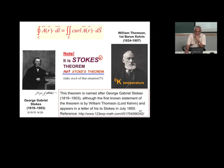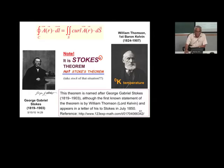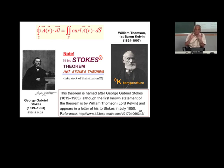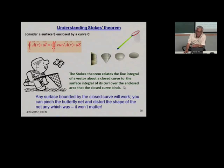The surface S is not unique for a given curve C — the same C can correspond to an infinite number of open surfaces. Given the sense of C, the direction of the curl is specified by the right-hand rule. The surface need not be planar. The theorem is applicable only to orientable surfaces, for which the normal at every point is uniquely defined. You can see there are several surfaces which can be associated with a given curve. Stokes theorem relates the line integral of a vector about a closed curve to the surface integral of its curl over the enclosed area. Any surface bound by the closed curve will work.